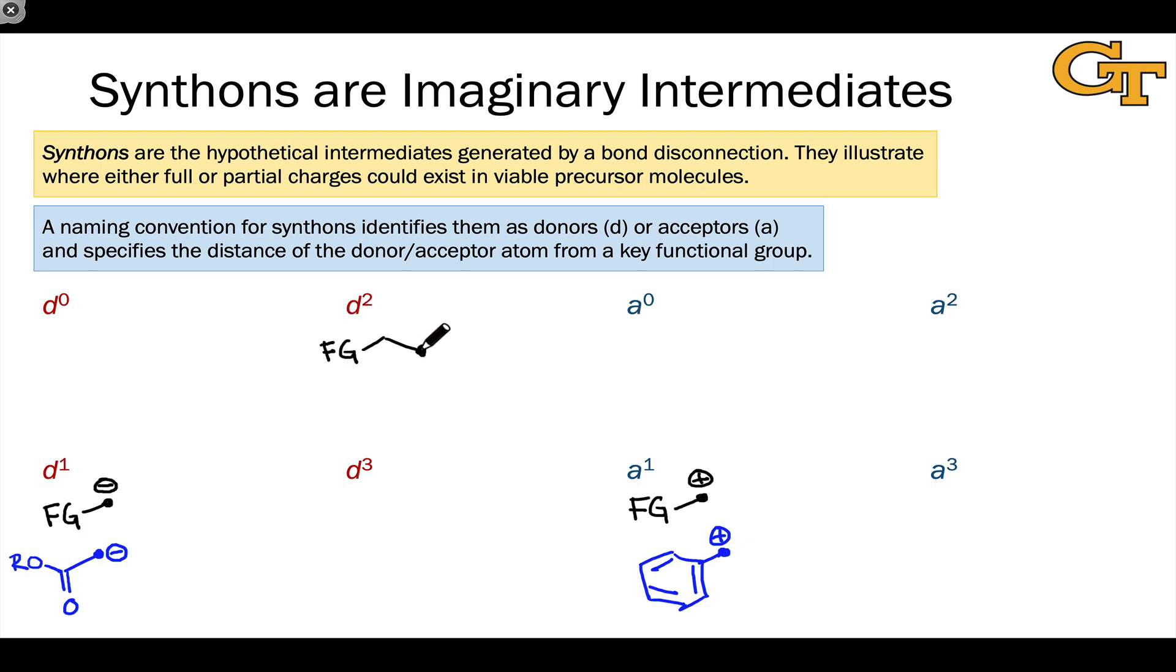A D2 synthon contains a donor atom that is two carbons away from the key functional group. This might be something where the functional group stabilizes the negative charge through an inductive effect. Likewise, an A2 synthon is a structure in which the functional group is separated from the donor carbon by two atoms. A good example of an A2 synthon is an alpha-beta unsaturated carbonyl compound where we have a carbonyl functional group linked to an alkene. We can draw resonance structures that illustrate that this carbon is partially positively charged.